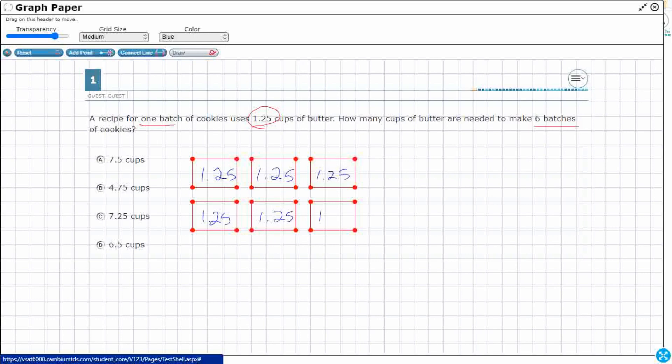But some of you might also be thinking you know what, multiplication is just kind of a shortcut for repeated addition. What if I were to, and I'm going to use the actual grid lines here, what if I were just to do repeated addition?